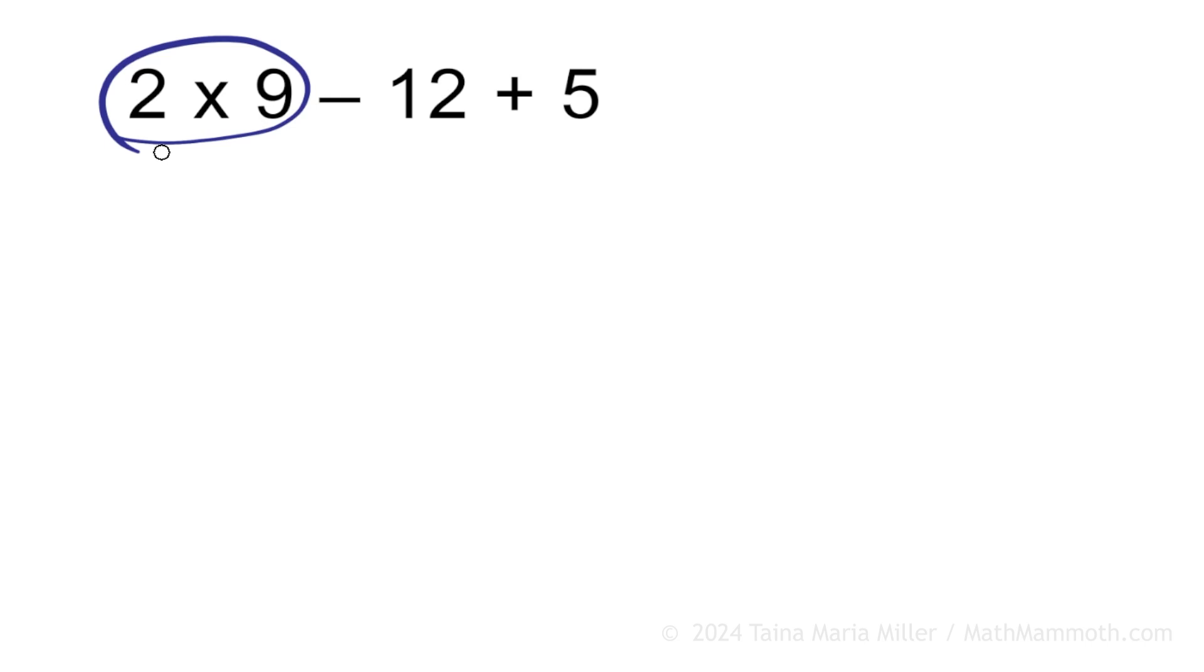2 times 9 first, that is just 9 and 9, 18, 18 minus 12 is 6. And then 6 plus 5, 11.